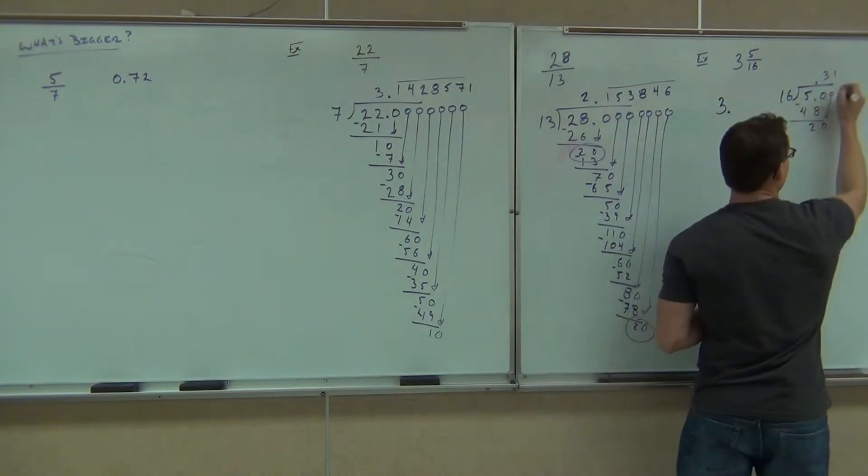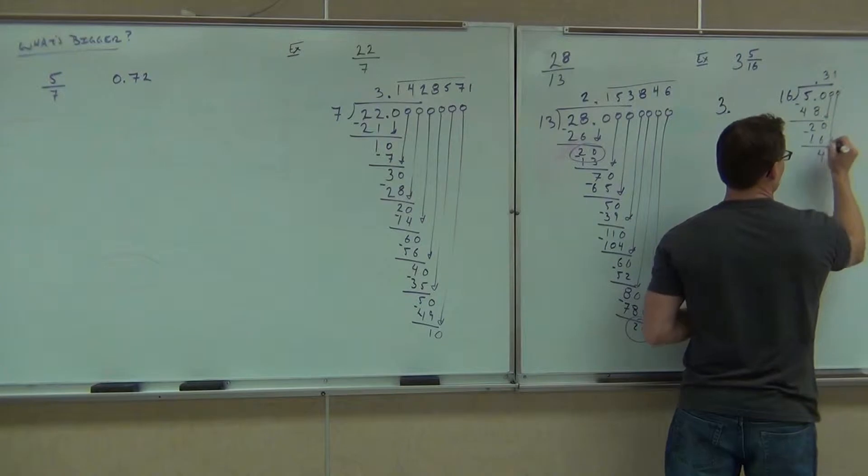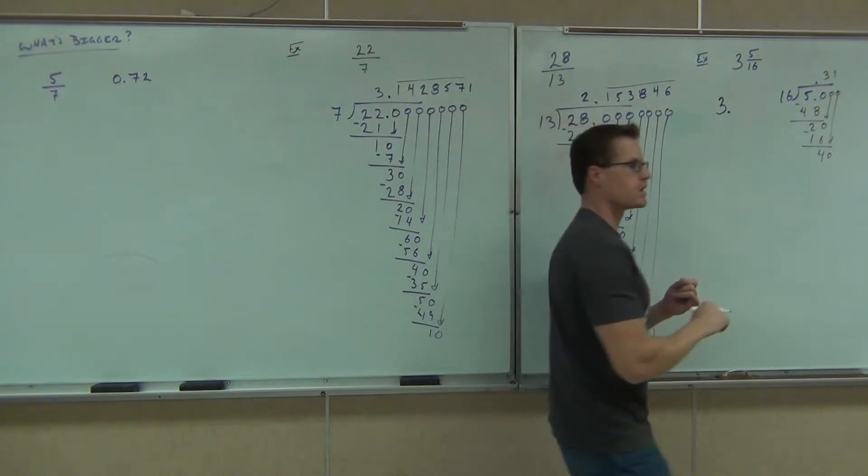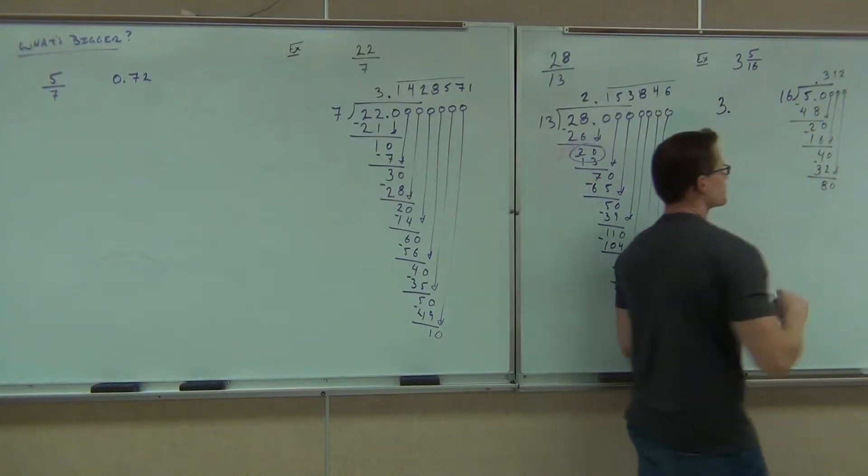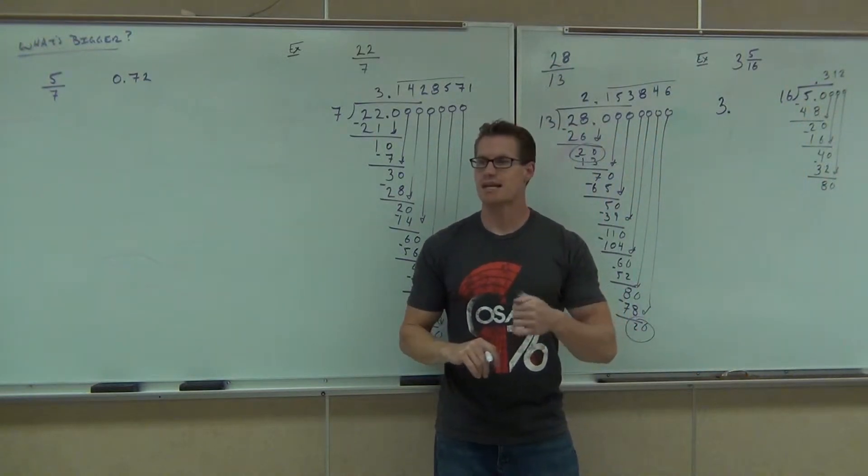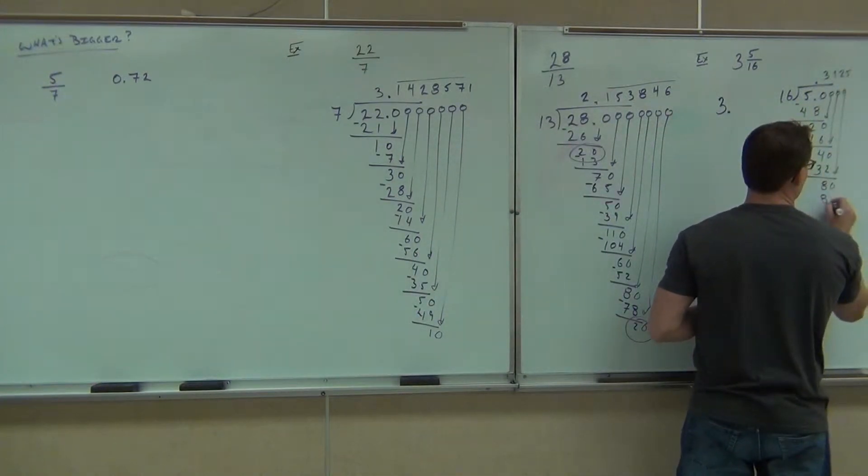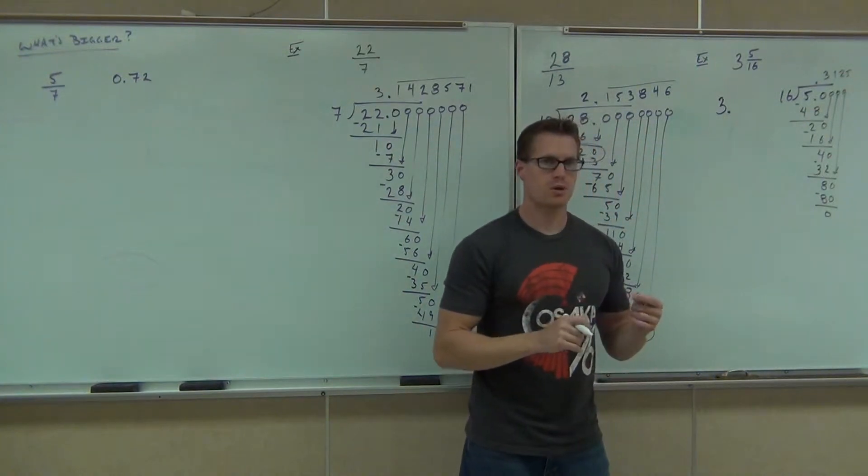16 goes into 20 one time. Subtract it to 4. You bring down a zero. It goes into 40 only two times. Subtract you get 8. Bring down a zero. 16 goes into 80 exactly five times. So you're going to get a 5. It's going to be 80. You subtract, you get the remainder of zero. So your decimal is 0.3125.